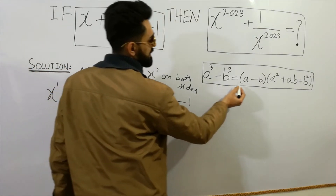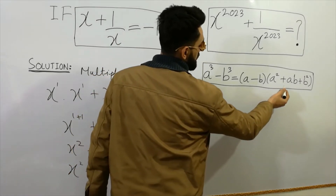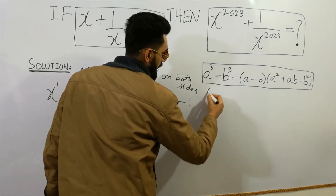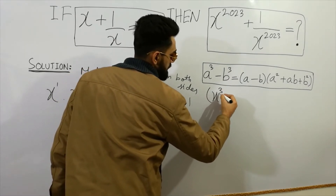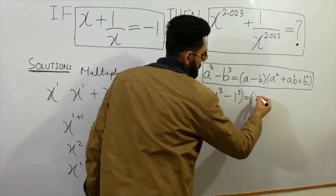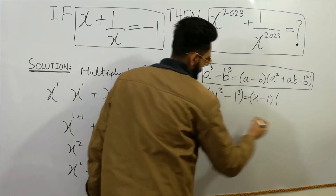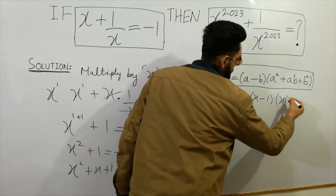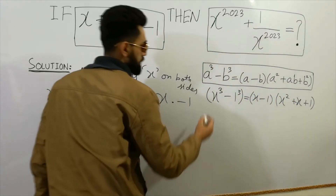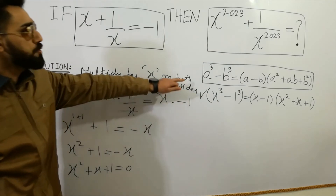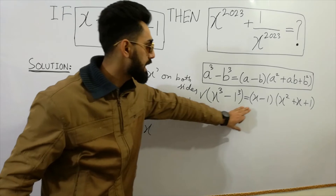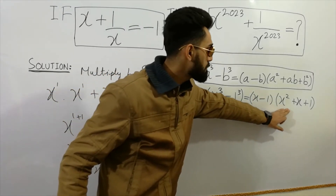Now, since a cubed minus b cubed is equal to a minus b times a squared plus ab plus b squared, we can apply this similarly here. We write x cubed minus 1 cubed, which equals x minus 1 times x squared plus x plus 1.